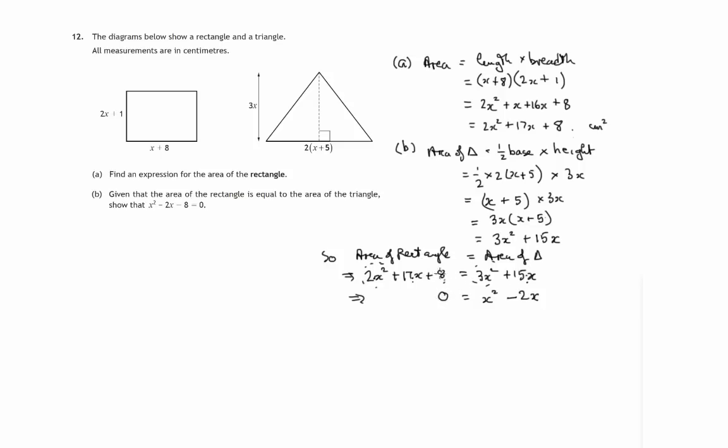This leaves a 0 on the left hand side. And take away 8 from this side. And let's write it the normal way round. x squared minus 2x minus 8 is equal to 0. Which was what we were asked to show.